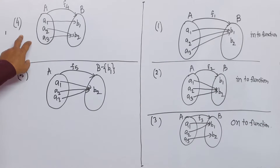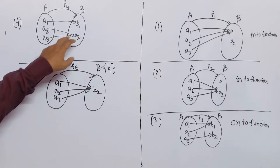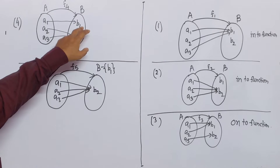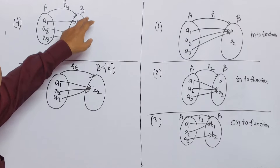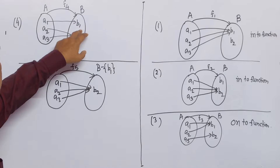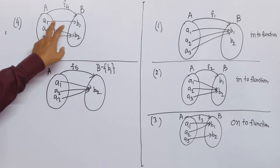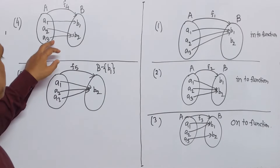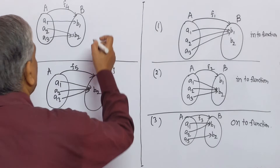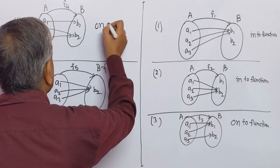Number 4. Here also we see that every element of B, meaning every element of the codomain, has pre-images. Therefore, this function is also known as an ONTO function.